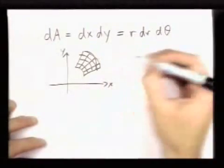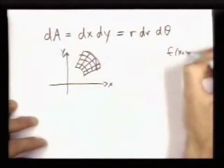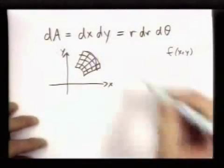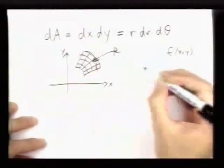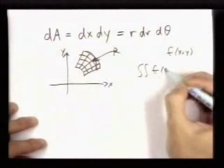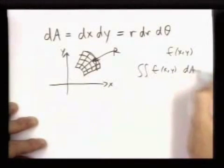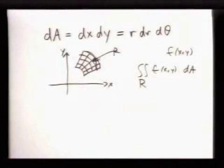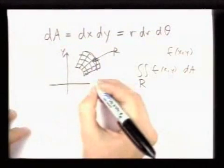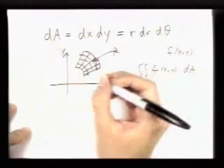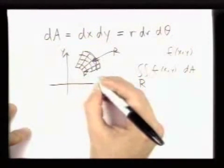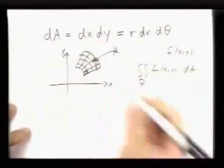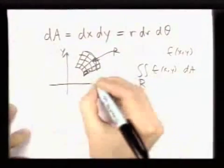If I have some function in mind, say f of xy, and I want to find the double integral over this region, a way to approximate this that's different from what we've seen before is to pretend these are little squares. They aren't squares, but they're close to being squares.